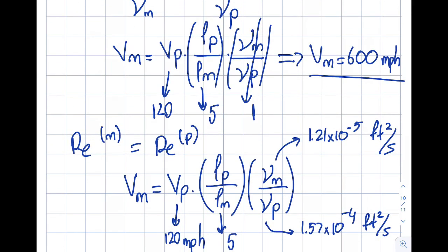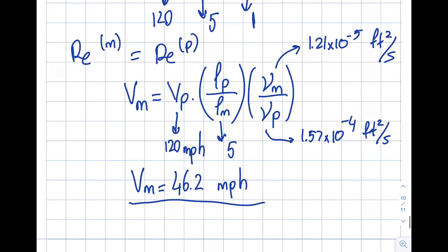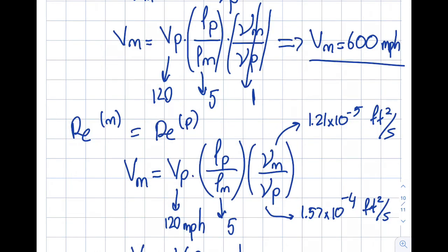To be fair, 46.2 miles per hour is fairly high velocity for a water tunnel as well. It's worth noting that this gives you some options.